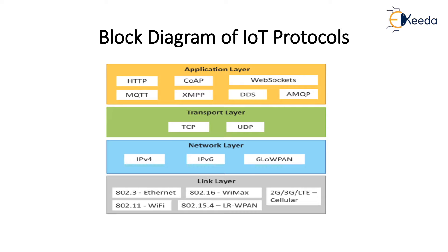Level six is the application part — reporting based on the input received, with analysis and control of the application. Level seven involves people and business processes, determining whether the application is used for individual, industrial, or business purposes. Collaboration and processes take place at level seven. This is the IoT architectural view designed by Cisco.